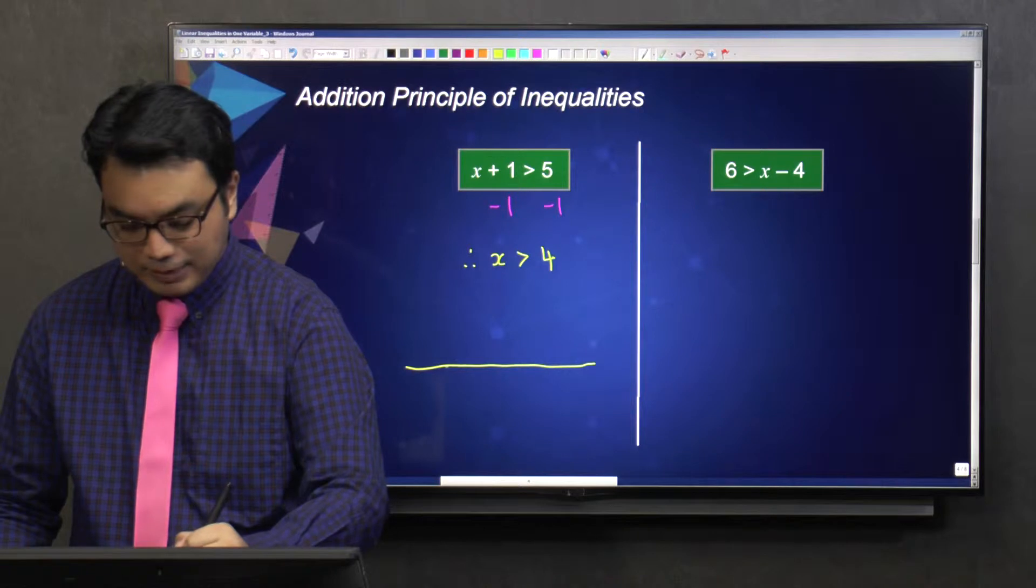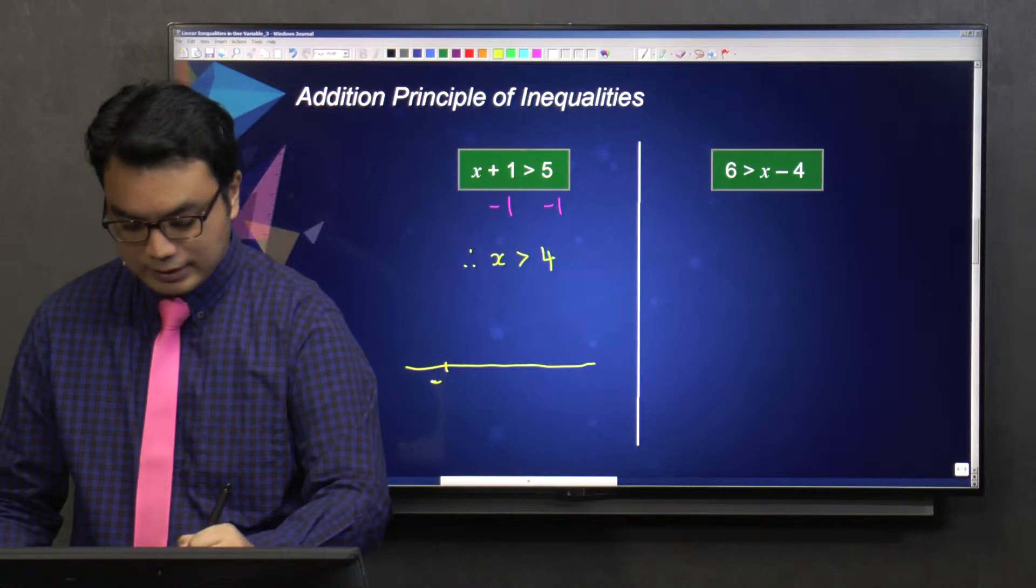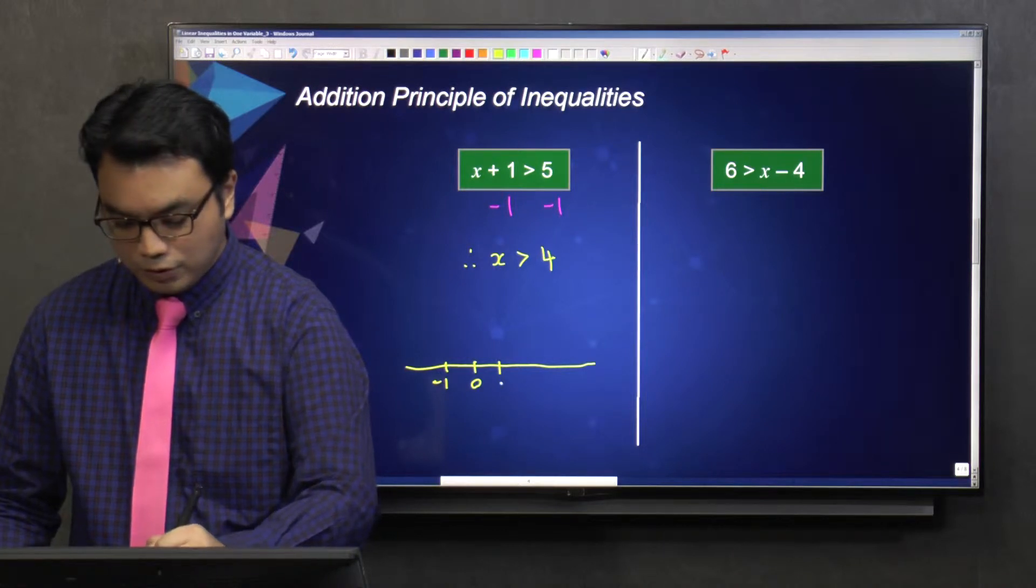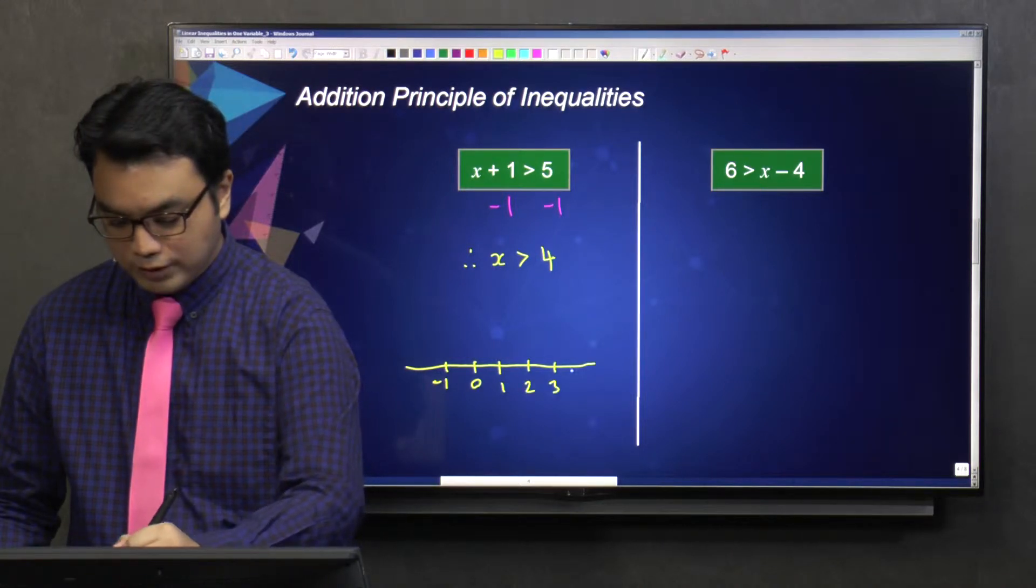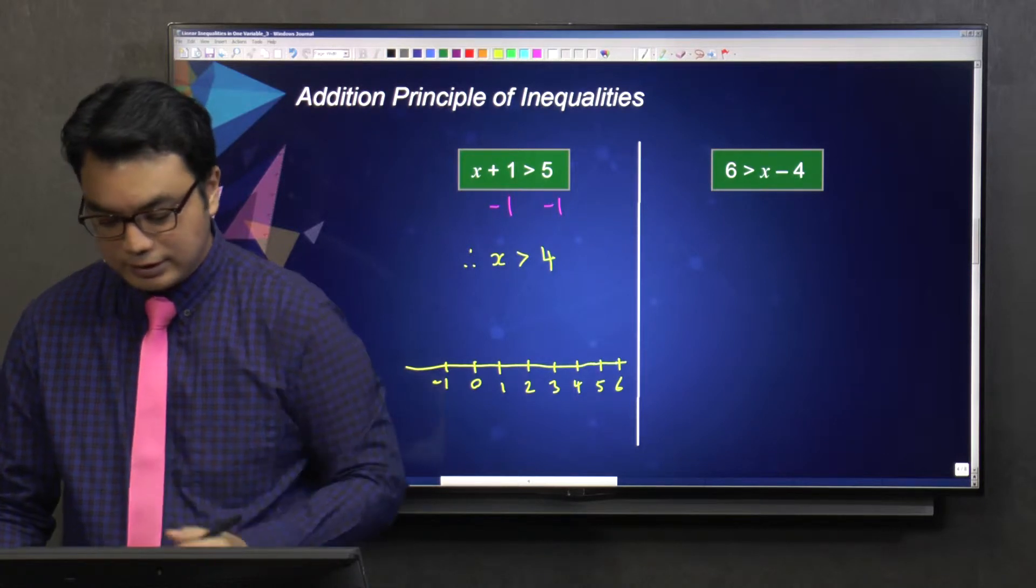So let's say this is a number line. And let's say I just pick some values. Let's say this is negative 1, 0, 1, 2, 3, 4, 5, 6.